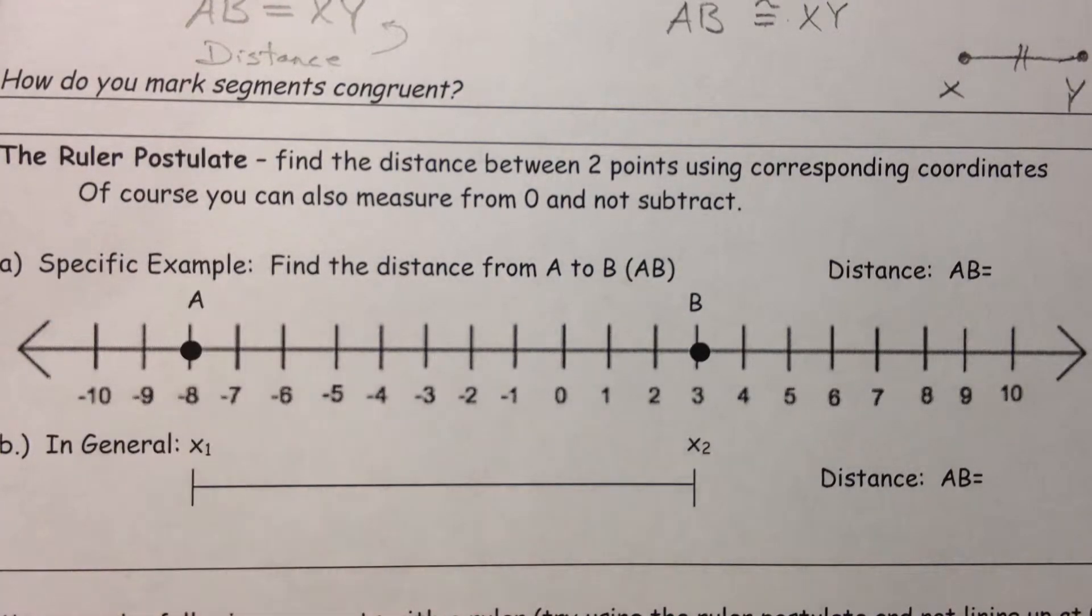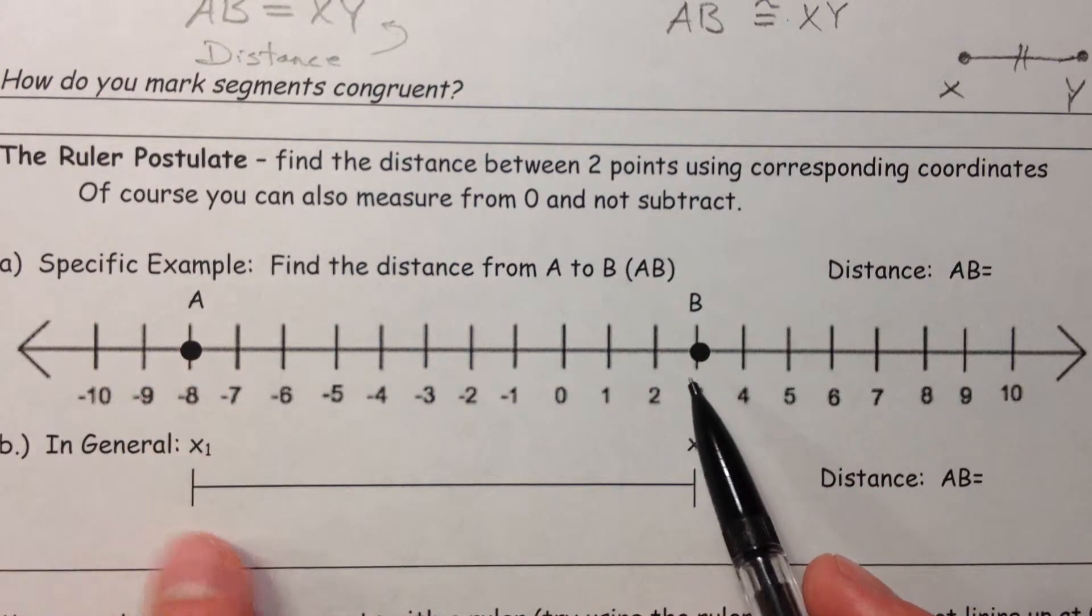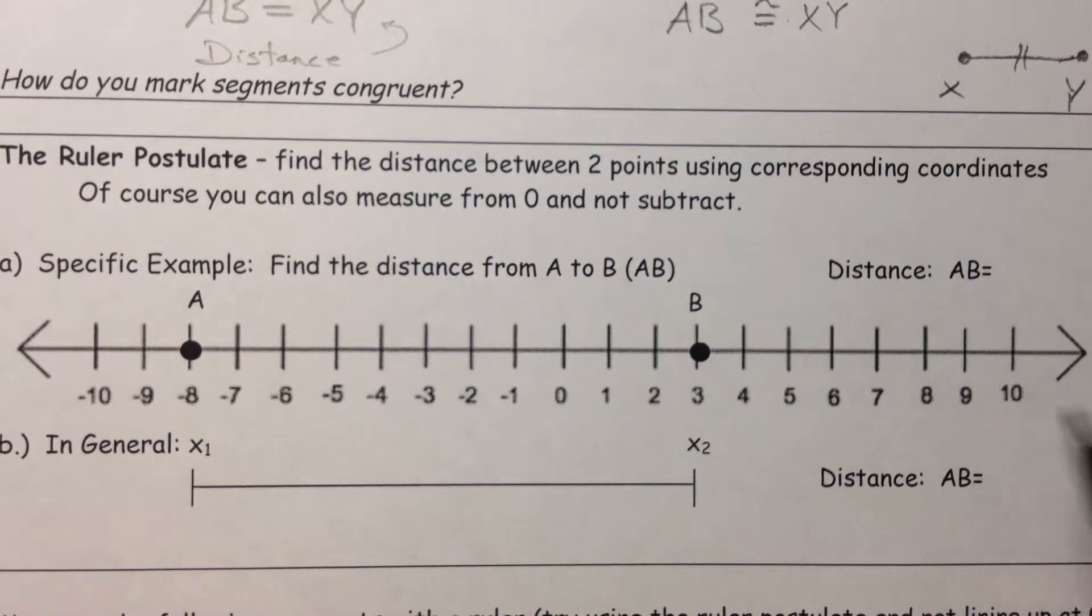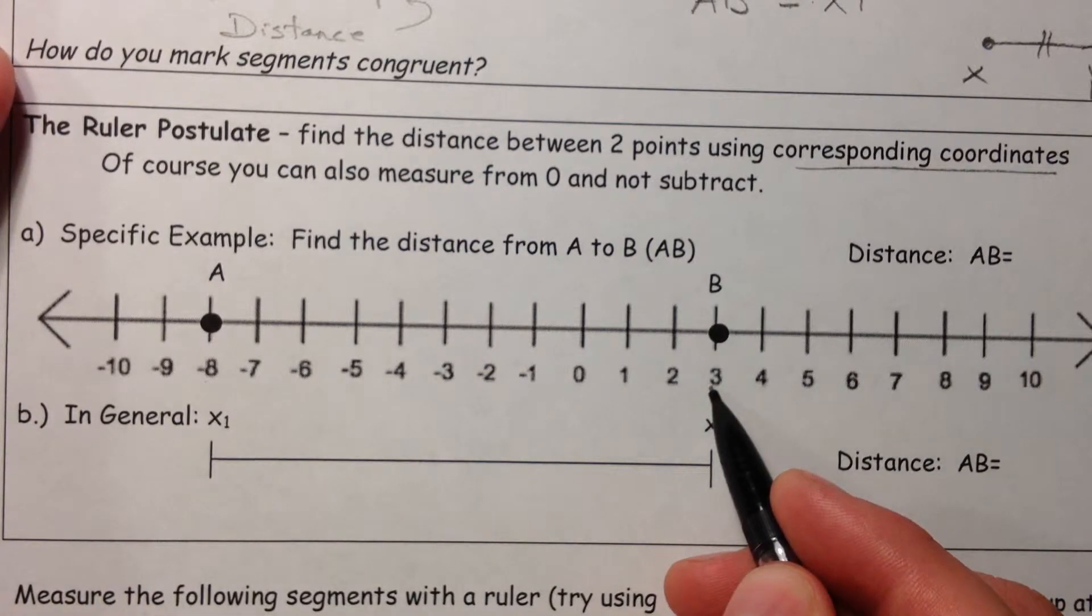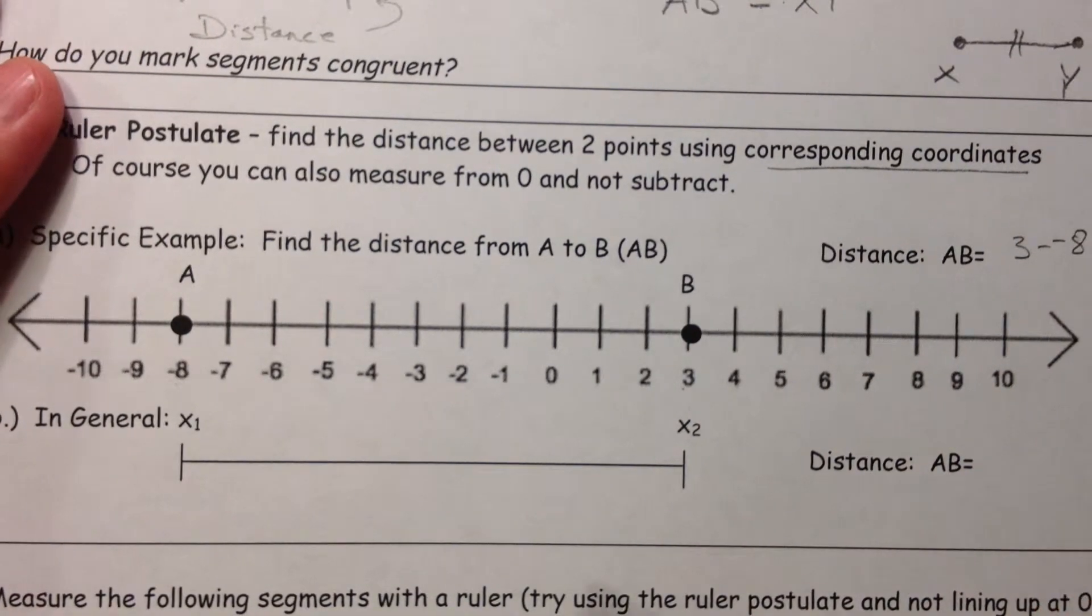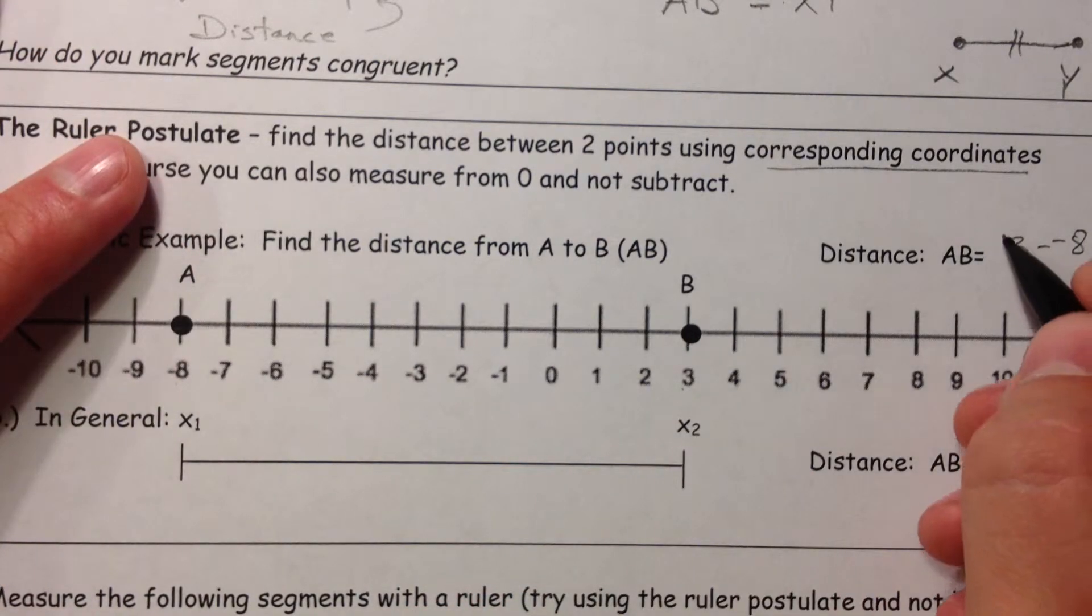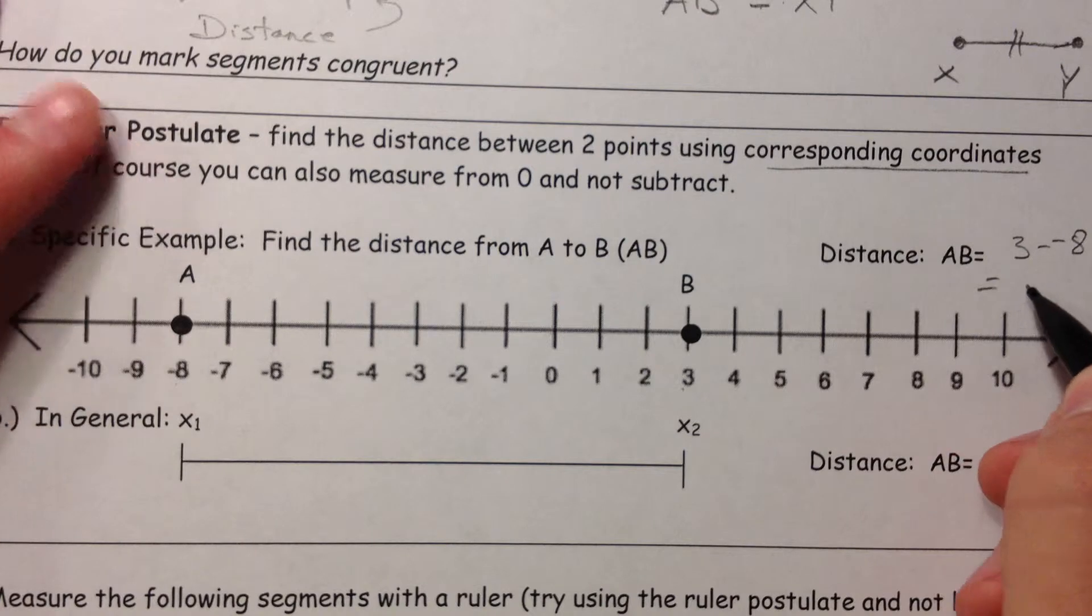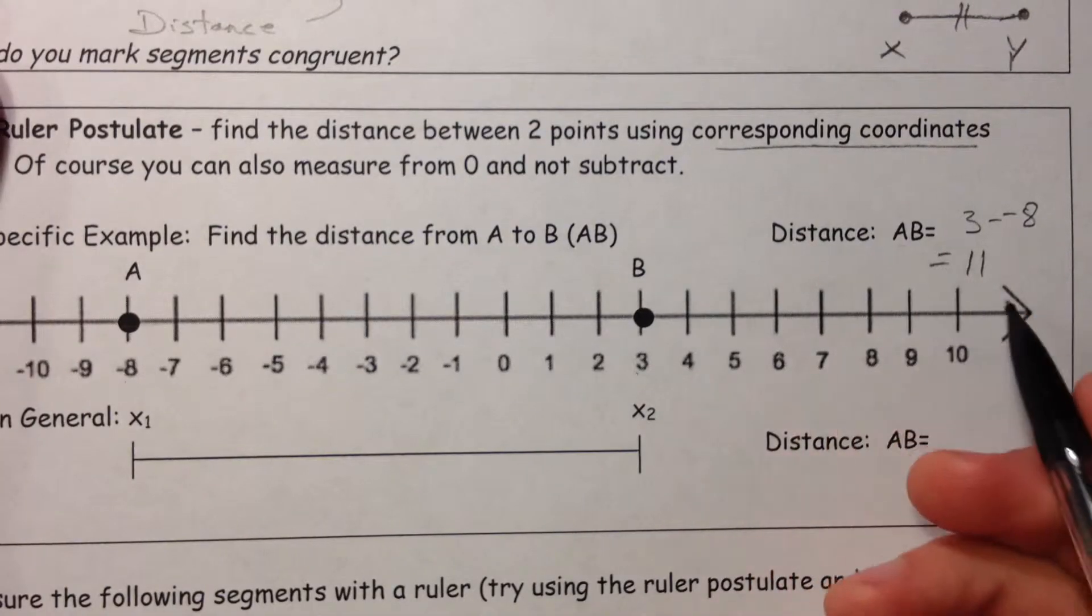The ruler postulate. If you want to find the distance between, say, A and B, you're going to take some relative position, meaning a corresponding coordinate. So A right now is at negative 8, and B is at 3. And you could just say, well, 3 minus a negative 8, if you subtract their distances from each other, or if you say, well, 8 to 0, and then 3 to 0. If you subtract their distances, you get 11. And so the distance from A to B is 11.